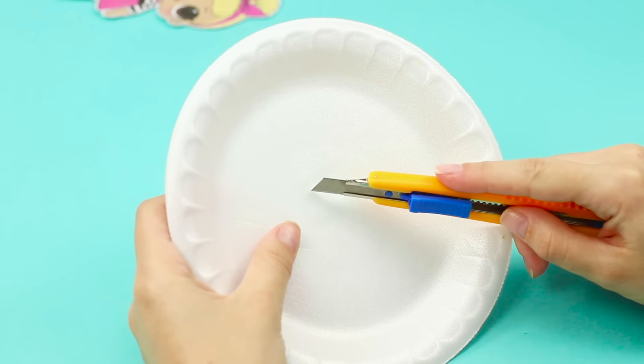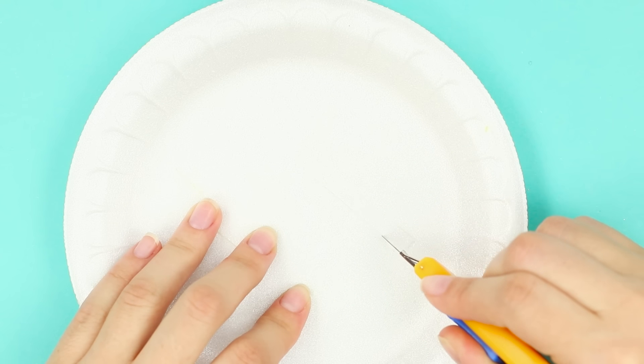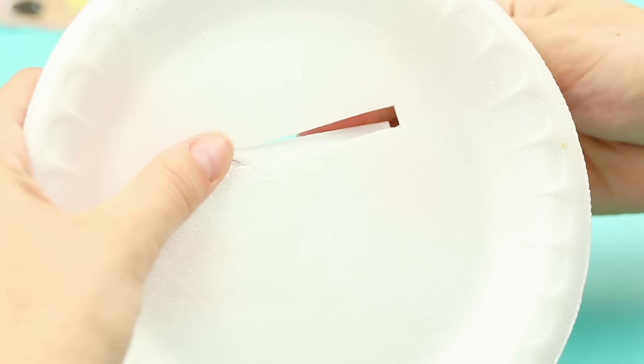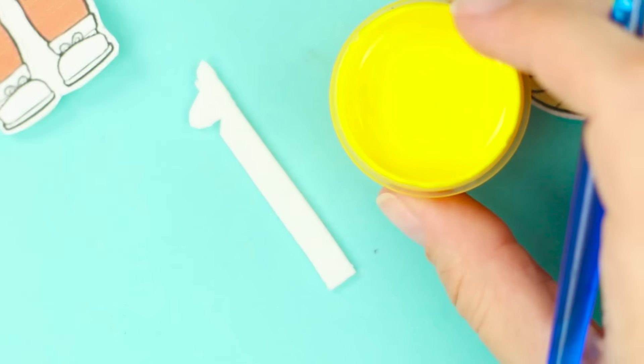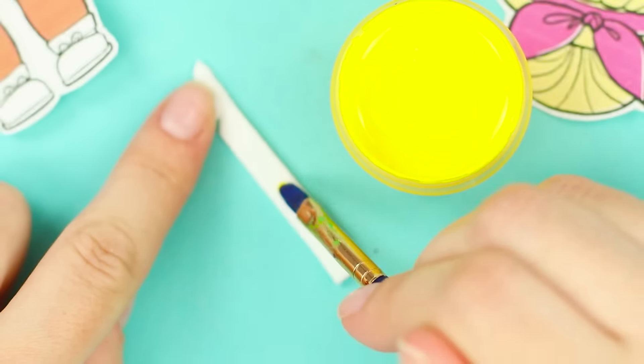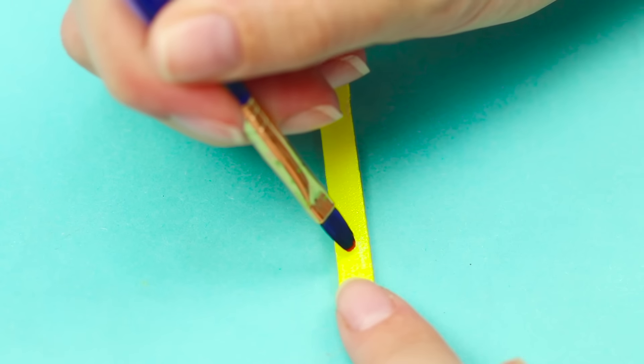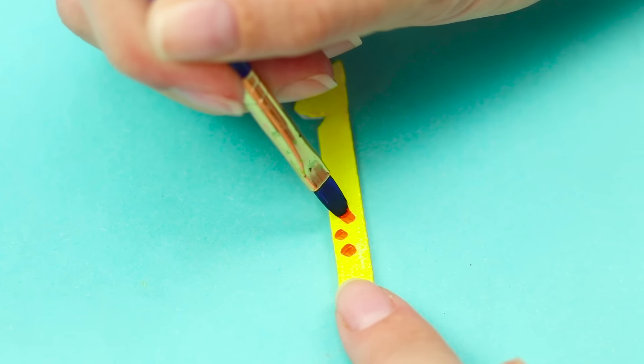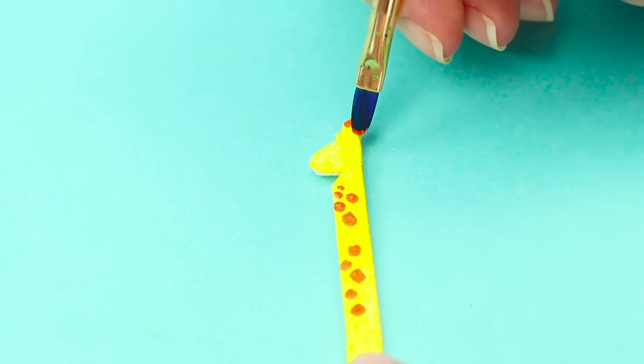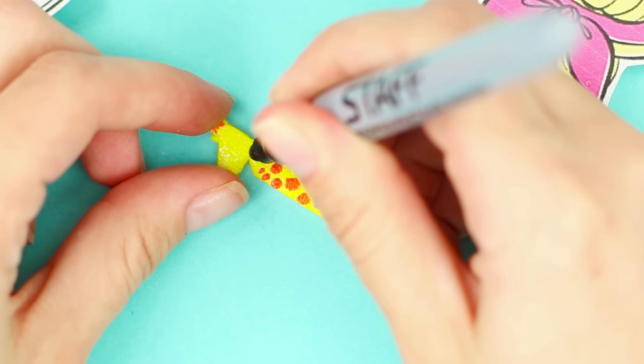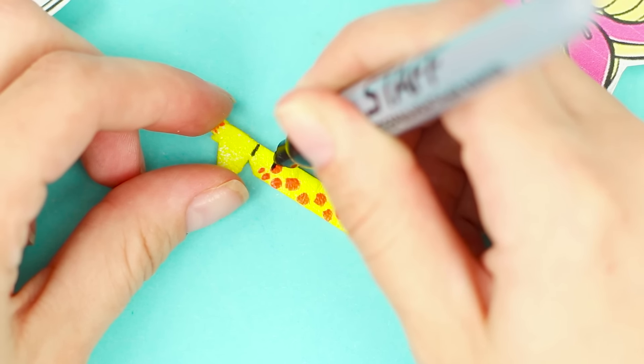Take a disposable plate. Cut a strip out of it using a utility knife. Paint it yellow. Draw brown specks over the entire length. Do you recognize this? It's a giraffe!